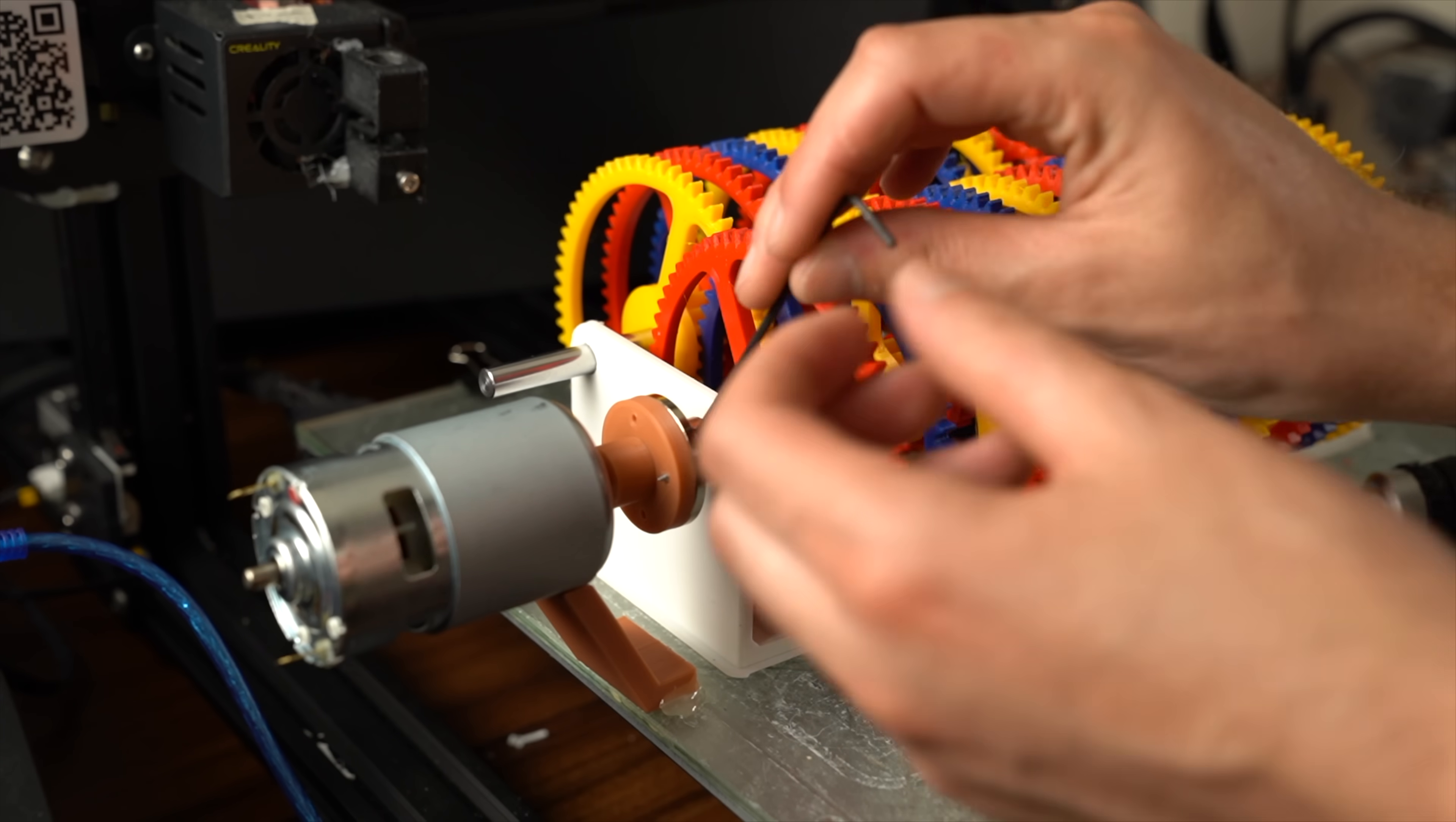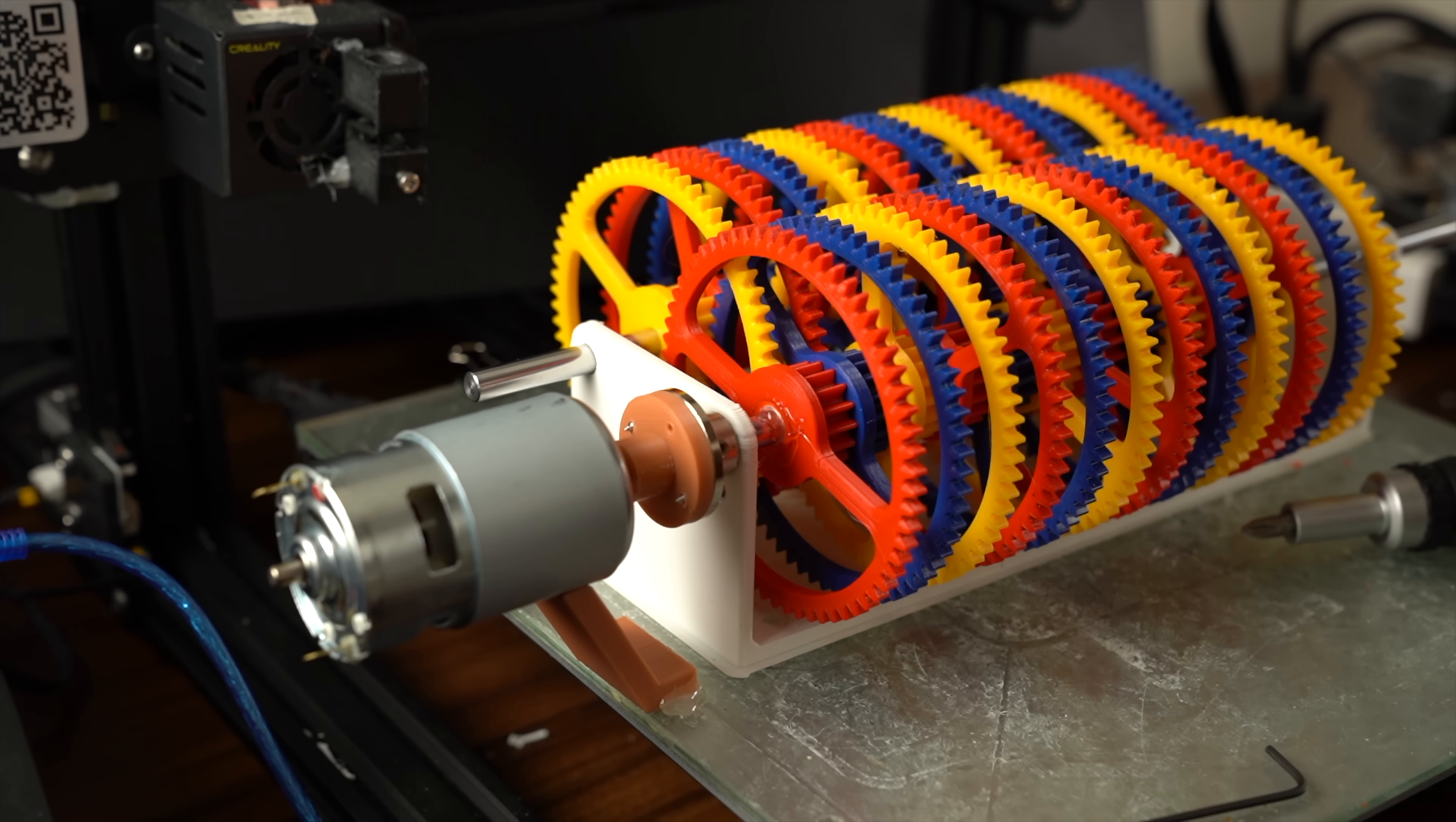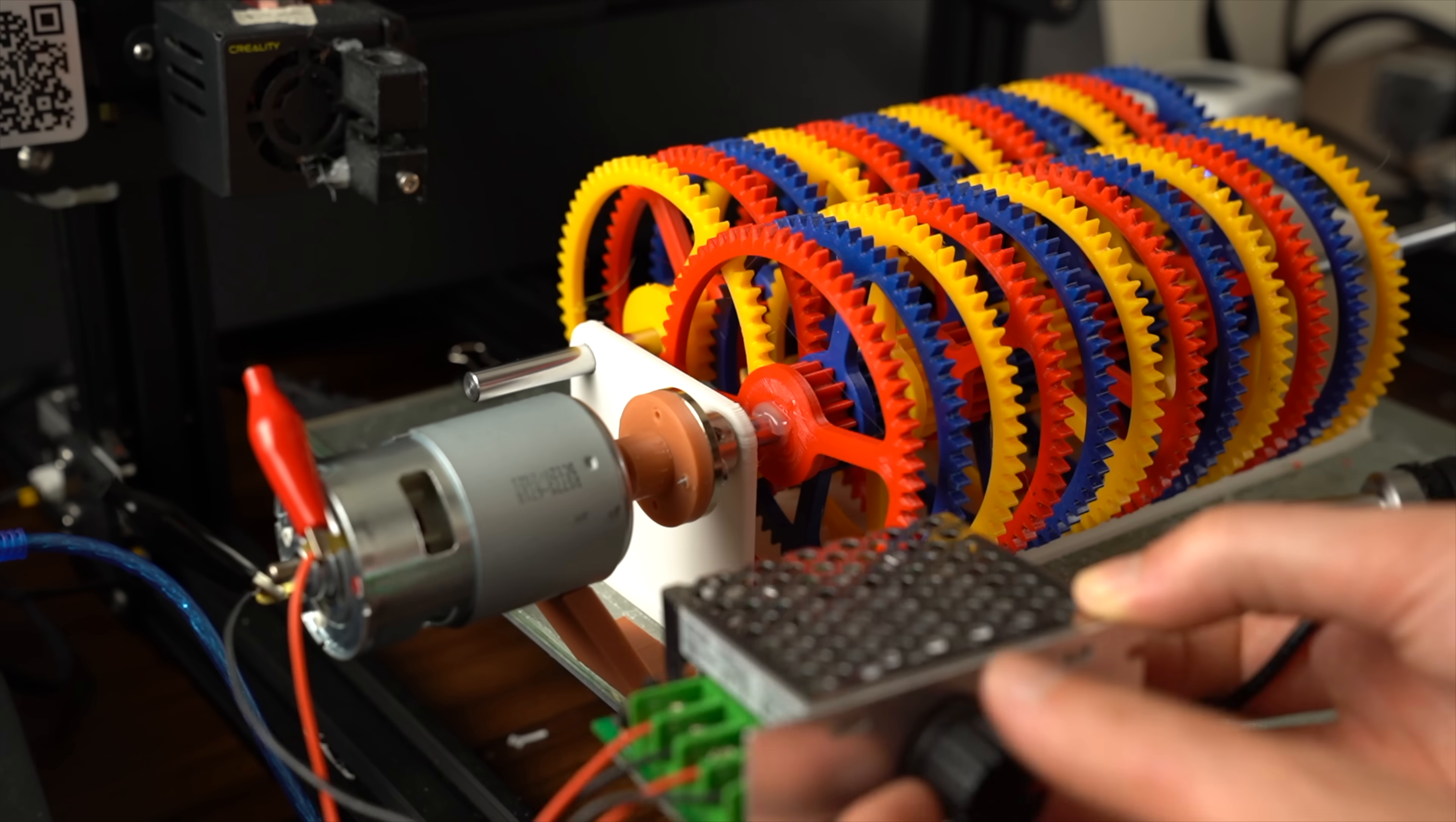So here I have a high speed electric motor and we're attaching it to the first gear. I'll be controlling the speed of the motor with this electronic speed controller. This way I can slowly ramp up the speed to not break the 3D printed gearbox.